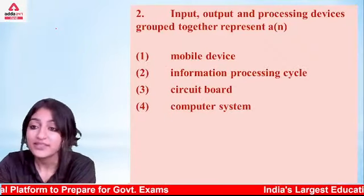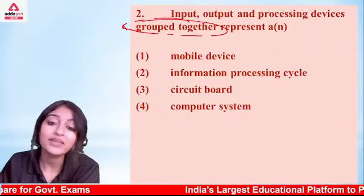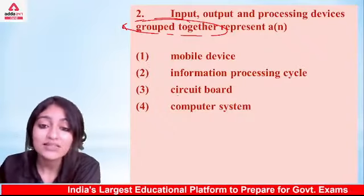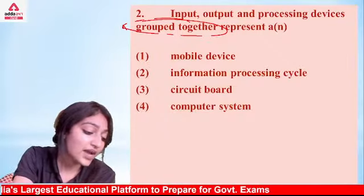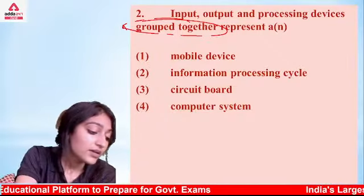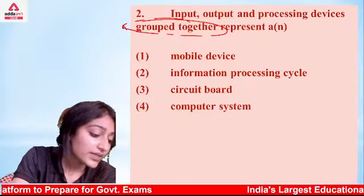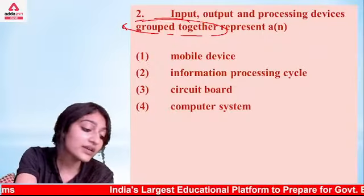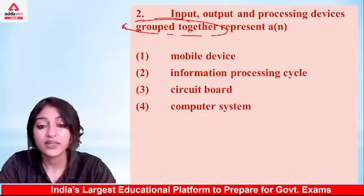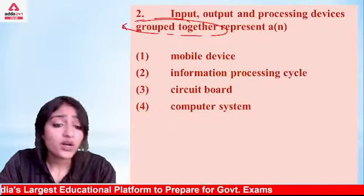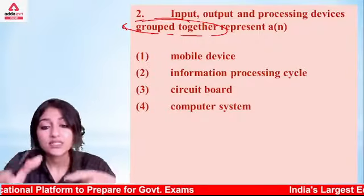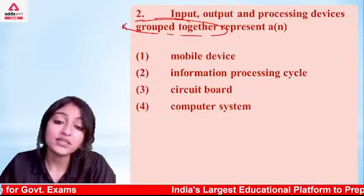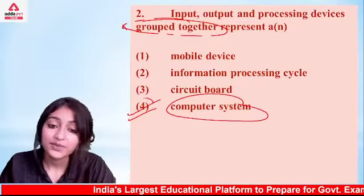We are going to group Input, Output, and Processing Devices and represent them. The information processing cycle, circuit board, or computer system — when we combine them together and represent them, the answer is 'computer system.' The parts are of the computer system.